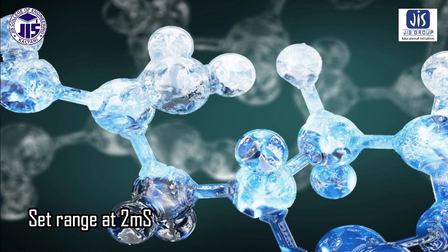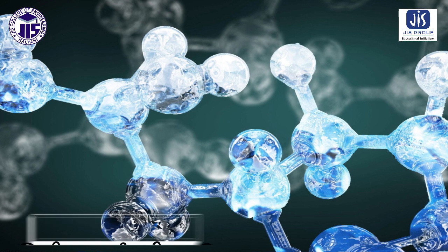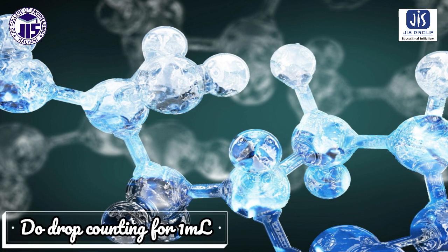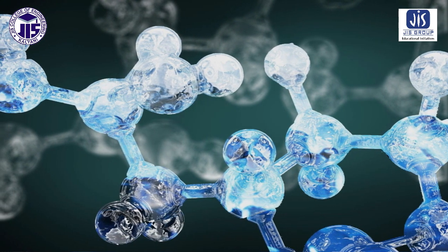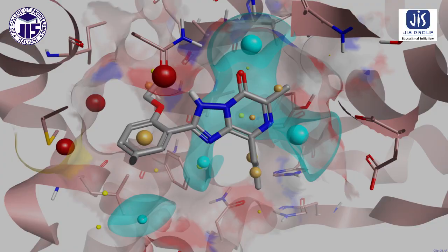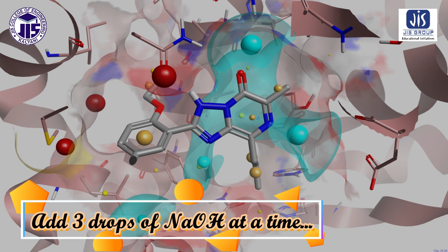Now we have to start the experiment. First of all, count the drops from the burette — how many drops are available in 1 ml — and note it down. In the beaker there is HCl, which will show some conductance value on the conductivity meter. Then we have to add NaOH drop-wise from the burette, uniformly adding three drops of NaOH into the HCl solution.